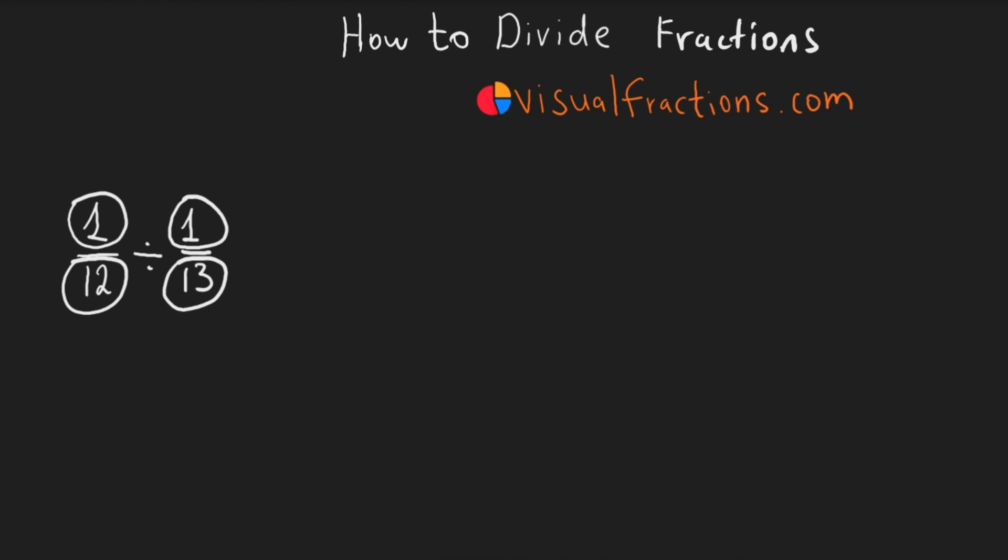So, let's perform the division. Keep the first fraction. 1/12th remains as 1/12th. Take the reciprocal of the second fraction. The reciprocal of 1/13th is 13 over 1 or just 13, because you flip the numerator and denominator.